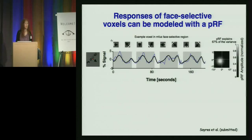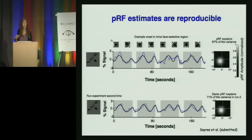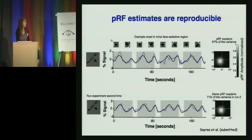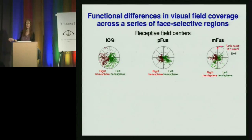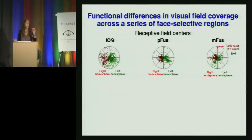Since we're scientists, we like to repeat our experiments and validate our results. We run the experiment again and see if this receptive field still predicts the second set of data — and you can again see a very good coupling between the predicted and the recorded response. These receptive fields explain a significant amount of variance in our time course. We do this on every voxel in each of our subjects and in each of the face-selective regions that we record. We get pictures showing the three face-selective regions — the inferior occipital gyrus, the posterior fusiform, and the mid-fusiform — and what you see is the part of the visual field activated by each voxel. Each dot represents a voxel in the brain, and the point represents where the center of the receptive field is in visual space.